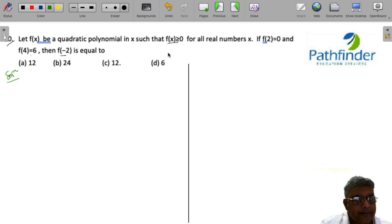We have a quadratic polynomial f(x) is greater than or equal to 0. Now, we all know that quadratic polynomials, the general term is ax² plus bx plus c. So f(x) may be equal to ax² plus bx plus c and this is given to be greater than or equal to 0.